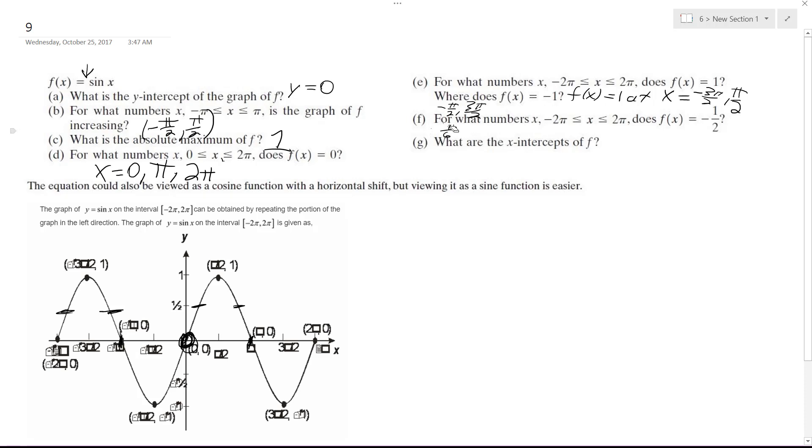Actually they went to one half, that's not correct for that. It'd be negative seven pi over six, negative 11 pi over six, pi over six, and five pi over six.